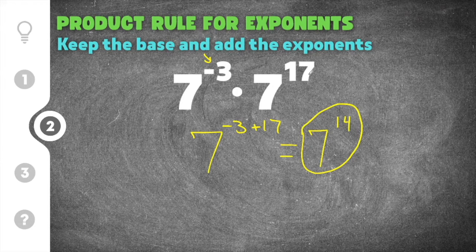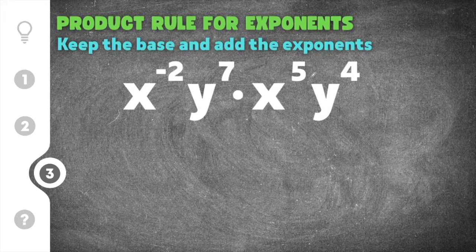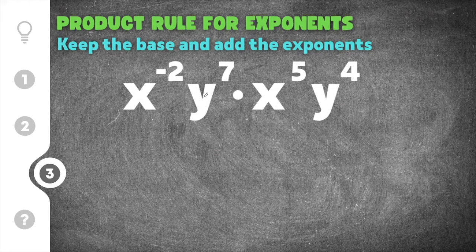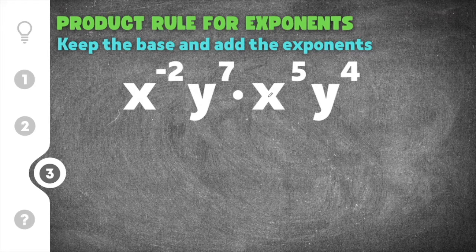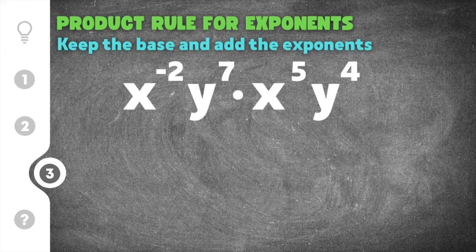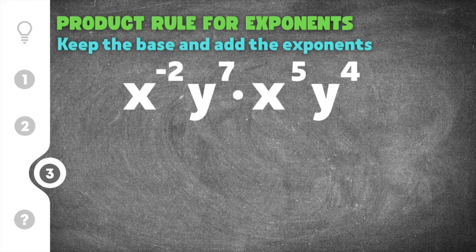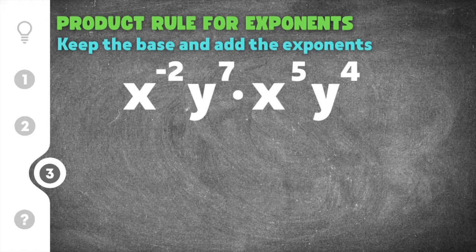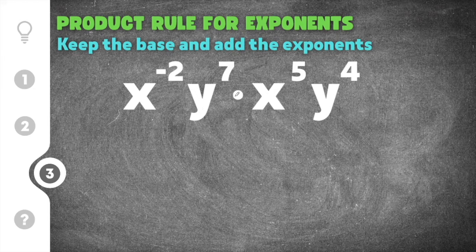Finally, our last practice problem on product rule for exponents gives us x to the negative second y to the seventh times x to the fifth y to the fourth. When we multiply these together, you can only multiply the terms that have the same base. So the bases have to be like terms in order to multiply them together.